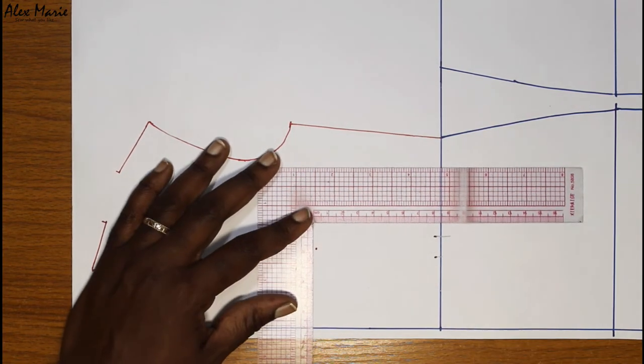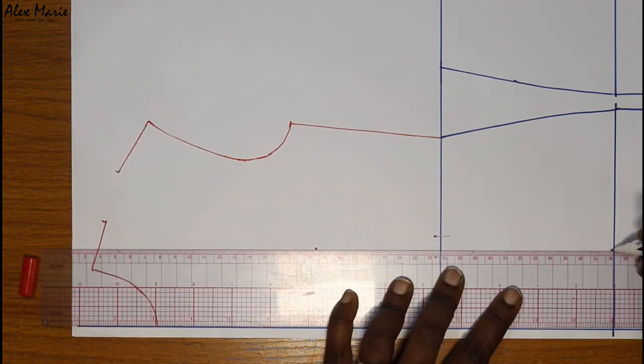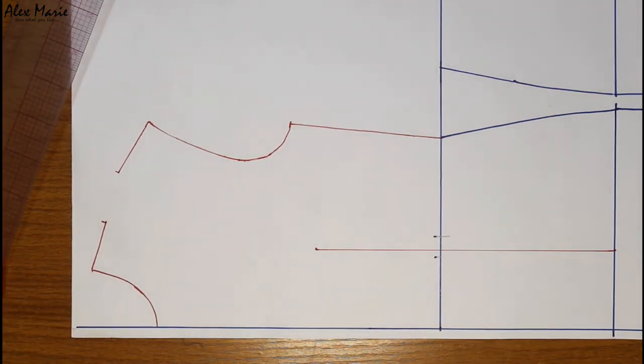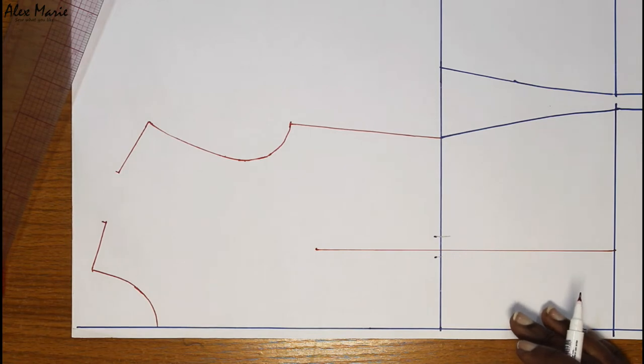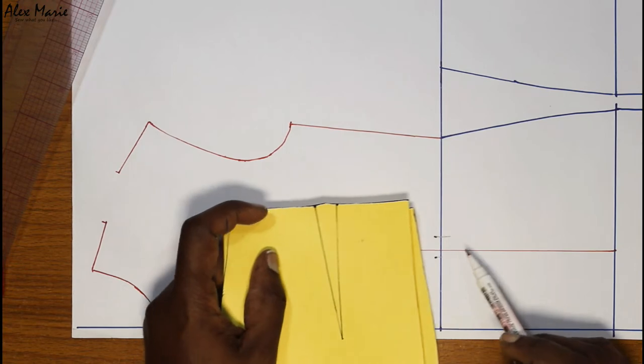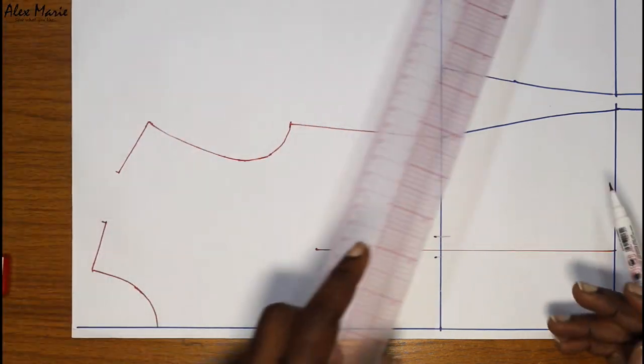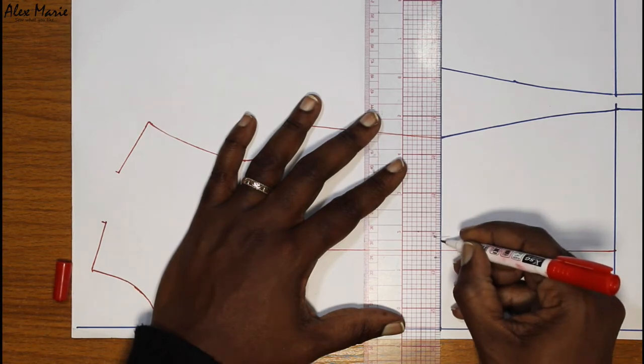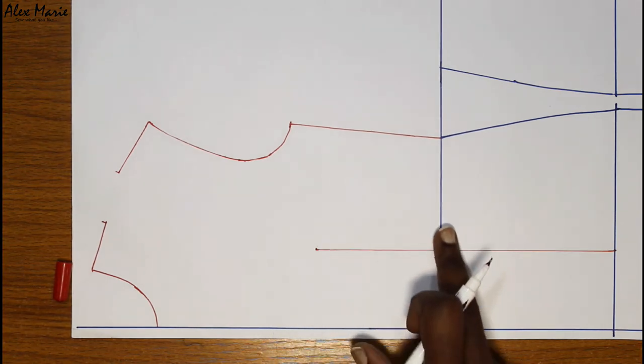This is our new dart position, we are going to ignore these, they don't matter anymore. Now, if you remember, we know that now how wide our dart was, mine was one inch, so I'm going to put one inch across this line, so half an inch on this side and half an inch on this side, and that's our new dart legs, and we are going to connect all these points.